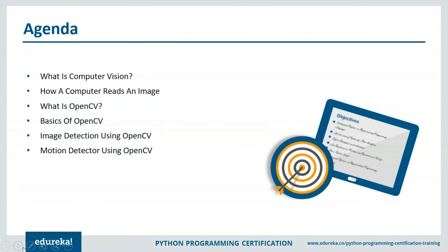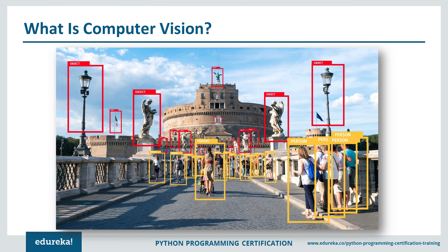Let us understand what exactly computer vision means. I believe all of you are on Facebook, and the moment you upload any picture on Facebook, there's a feature called auto tag. Facebook will give you suggestions to tag people who are in the image. That happens all because of computer vision. Computer vision is an interdisciplinary field that deals with how computers can be made to gain high-level understanding from digital images or videos. The idea is to automate tasks that the human visual system can do — recognizing a human face, a lamp post, a statue, things like that.